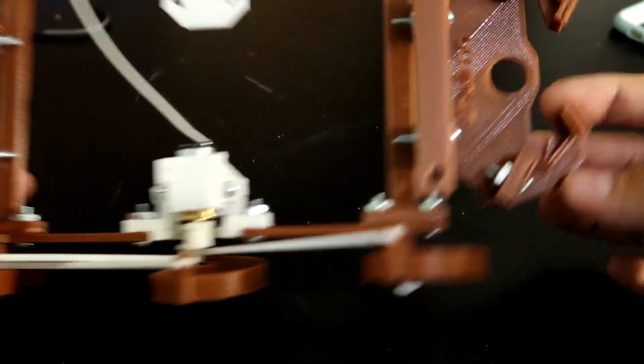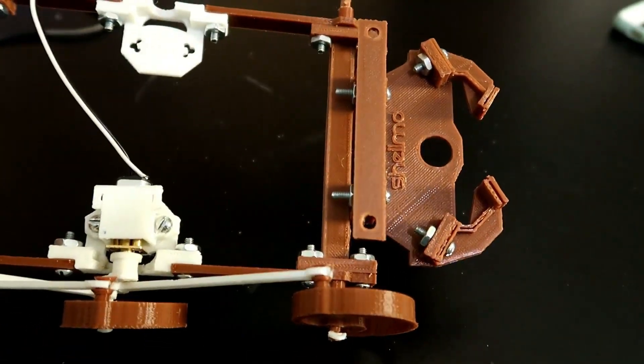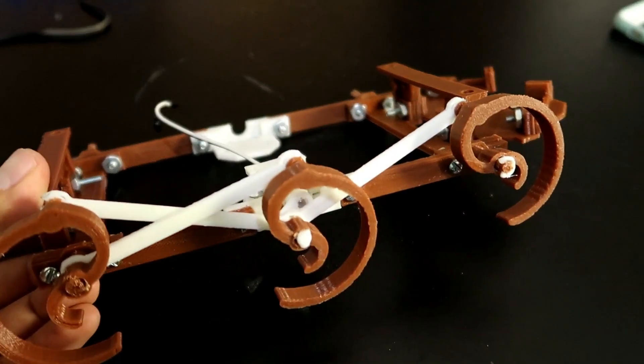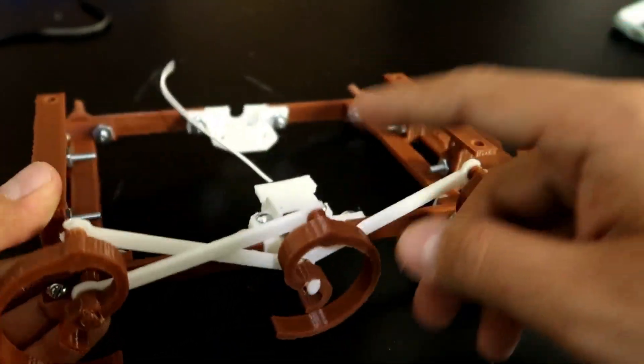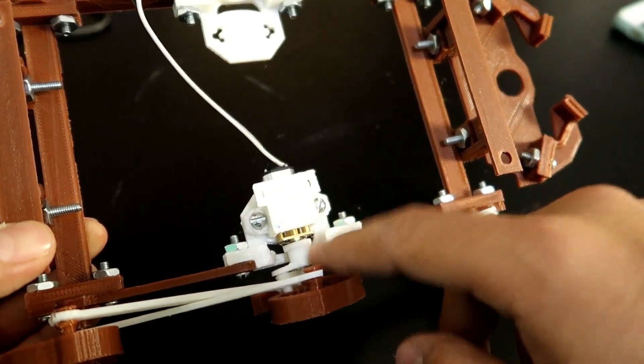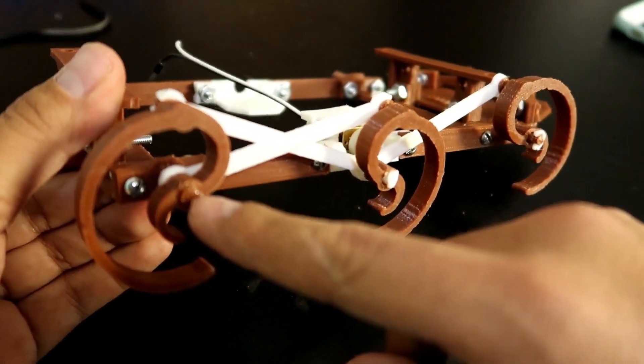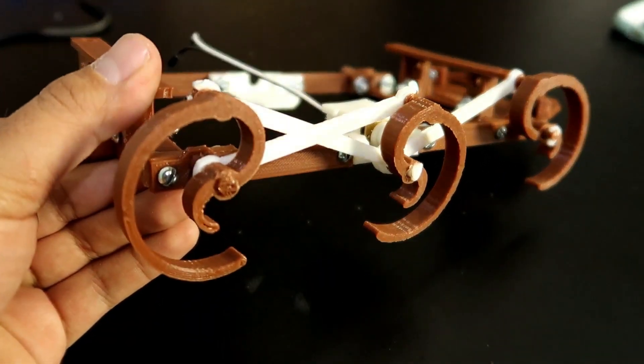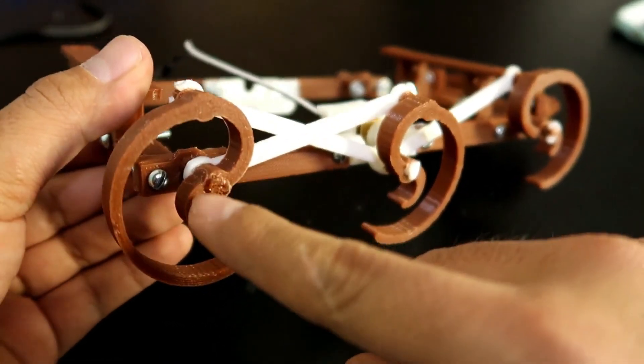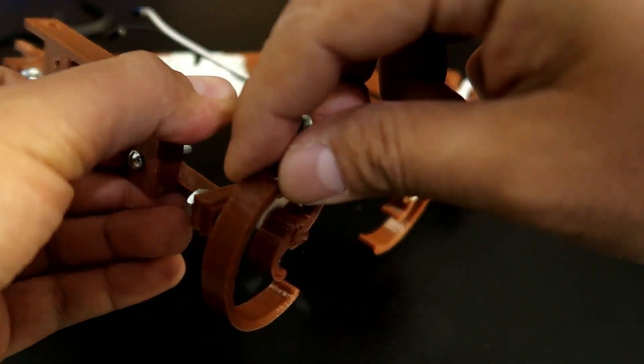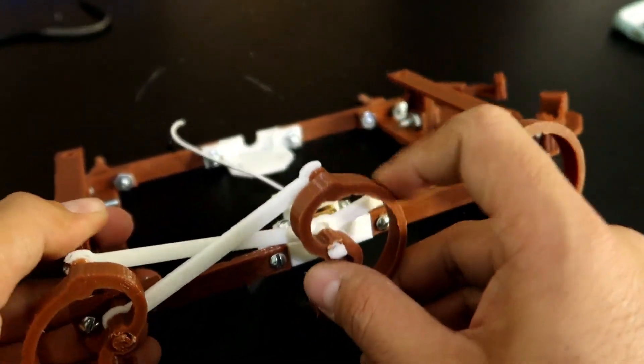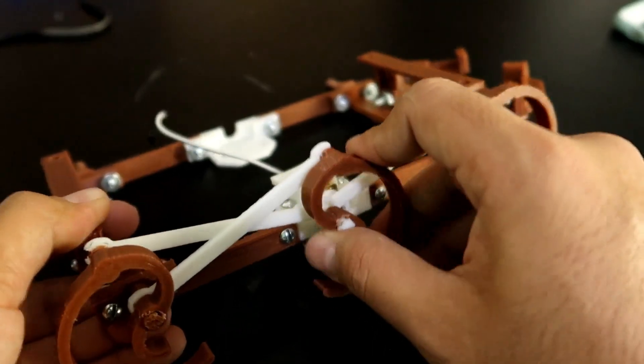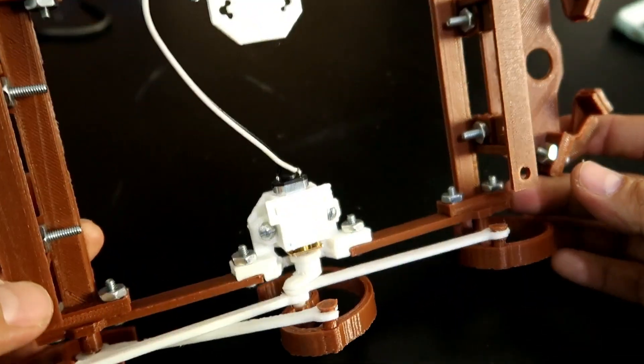Ya he colocado lo que son este tipo como de llantas, más bien son patitas de este escarabajo. La verdad es que me ha costado muchísimo trabajo poder sincronizar esto. Hay que lijarle muy bien. Aquí le puse con cautín para que no se saliera. El movimiento es muy raro pero es muy padre.